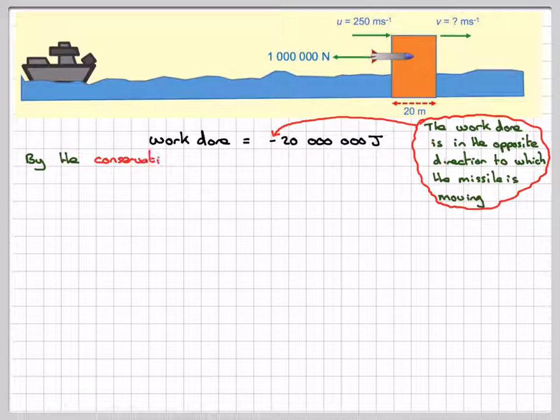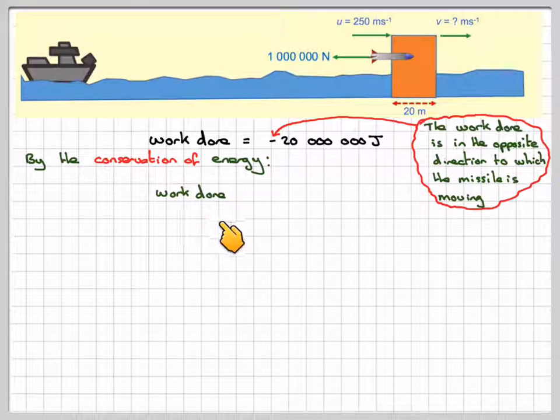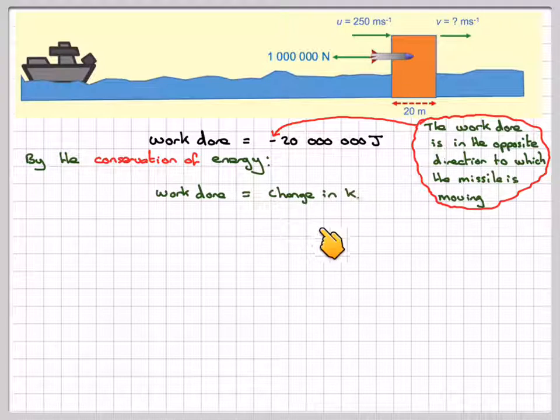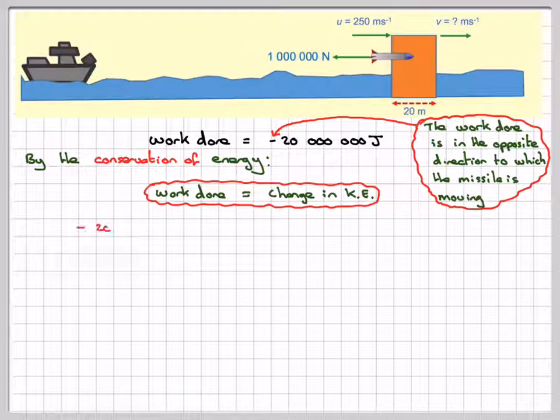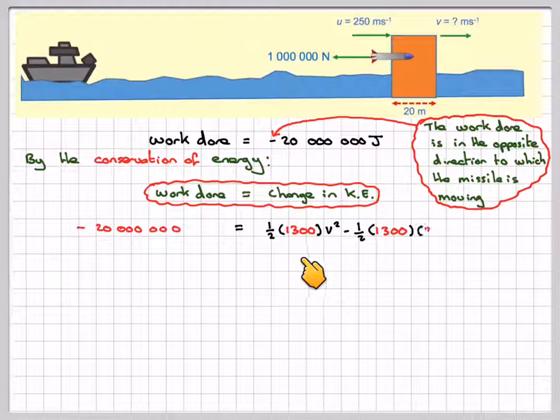By the conservation of energy, the work done must equal the change in kinetic energy. So minus 20 million equals ½ times 1,300 times v² minus ½ times 1,300 times 250².